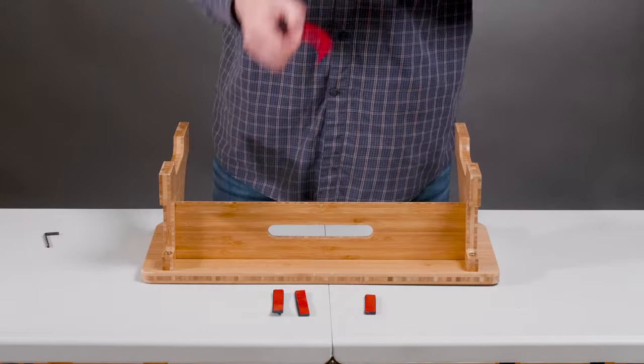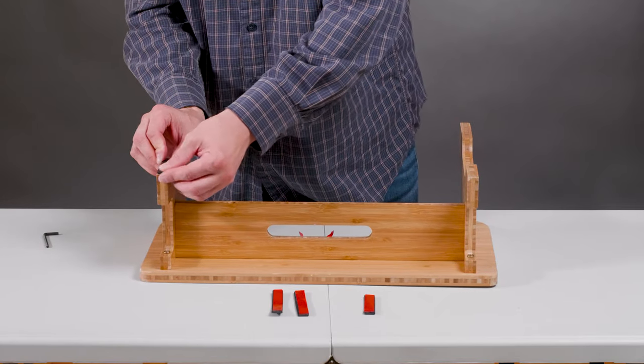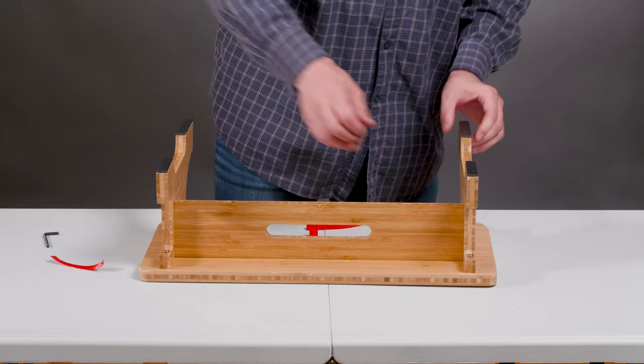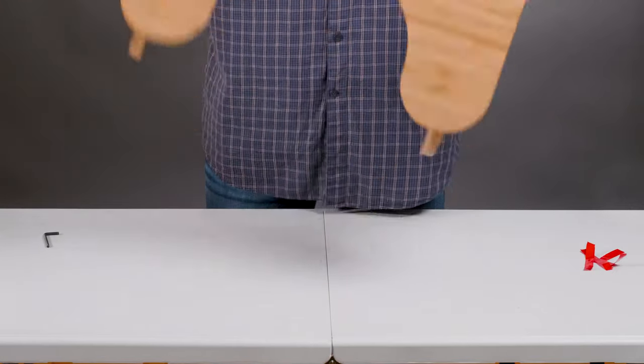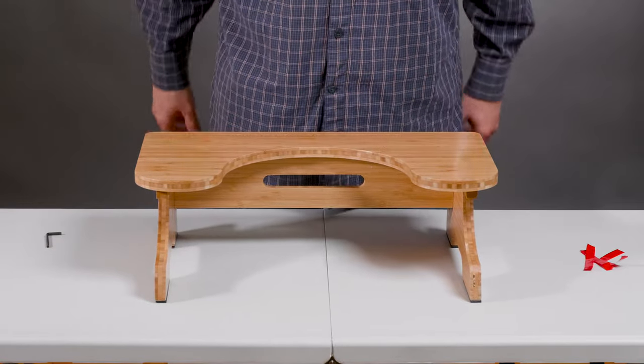Now we're going to stick the rubber feet to the legs. Remove the protective tape and align them, press them on. This should prevent the stool from sliding about and reduce the noise as you move it. There you go, solid and ready to use.